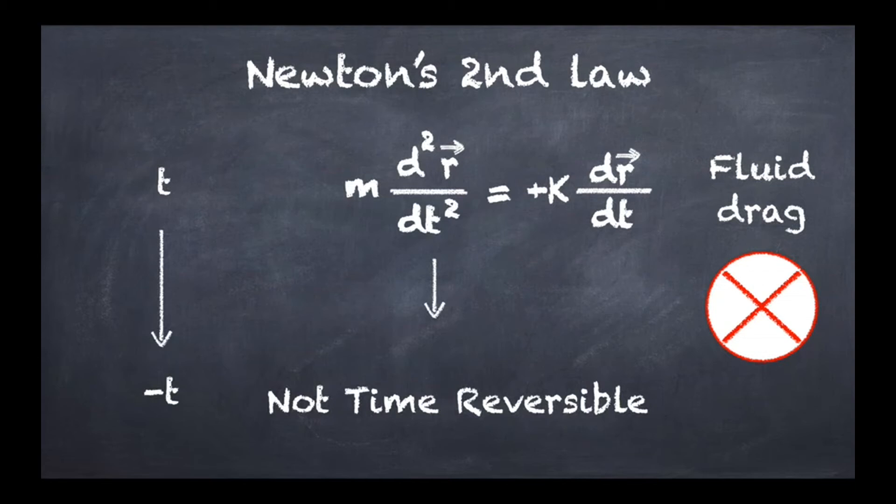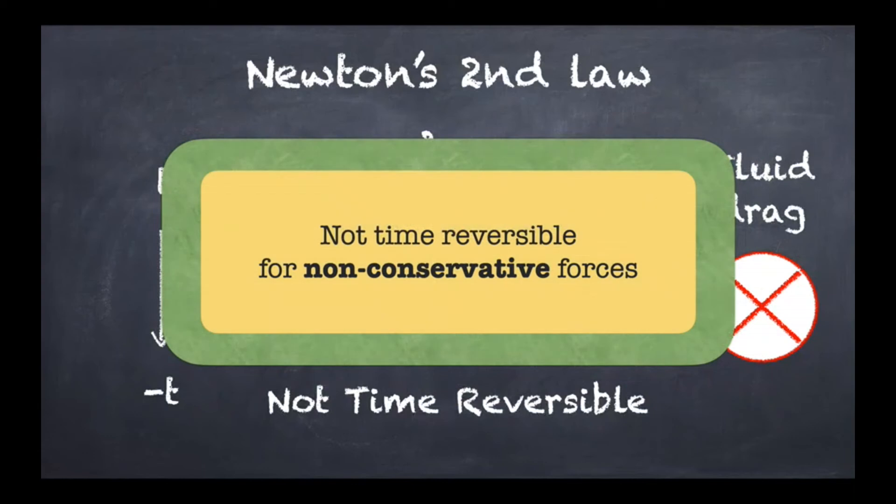Fluid drag belongs to a class of forces called non-conservative, and it turns out that Newton's second law is not time reversible for non-conservative forces. What we've seen is that if we look at Newton's second law, one of the most fundamental laws of classical mechanics, we end up having some forces for which Newton's second law is time reversible and some forces for which it's not.